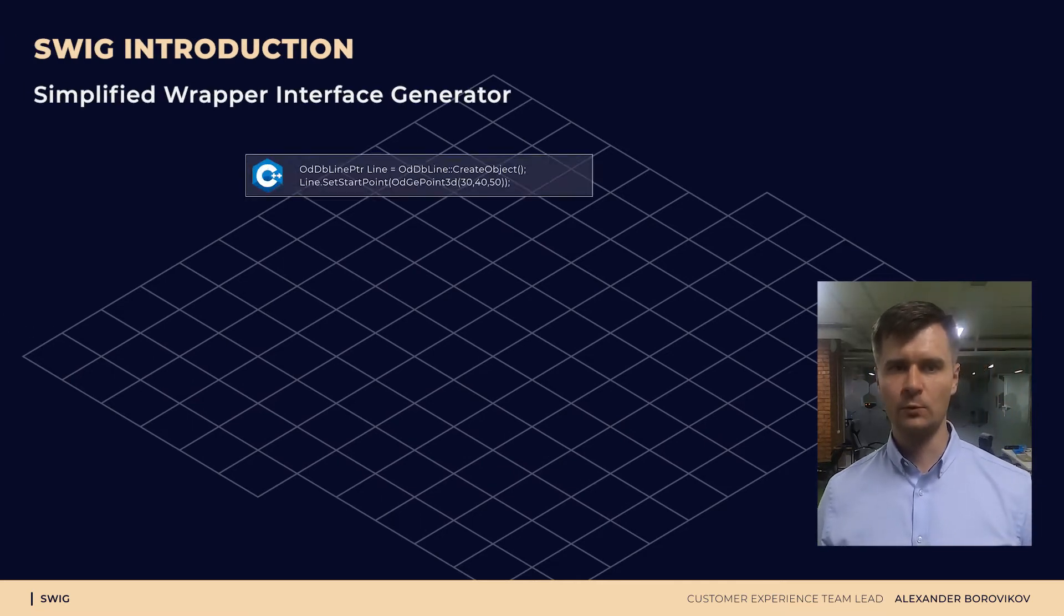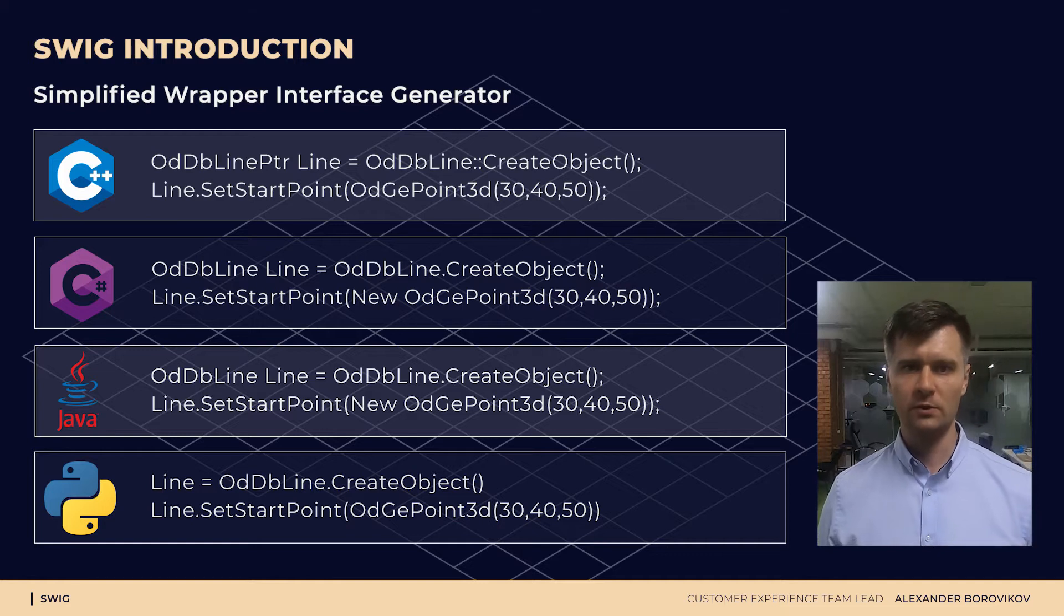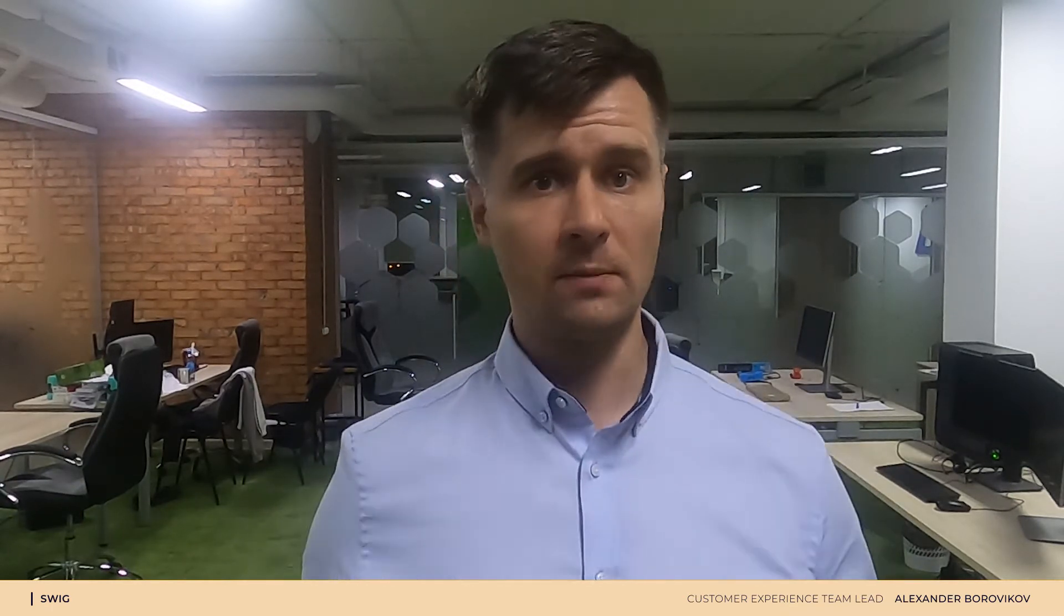The key advantage of SWIG-generated wrappers is that the code looks quite similar for all programming languages. And this allows us to use all the C++ legacy code for development. And as it is an automated procedure, we are able to generate the wrappers for the current, not some outdated release.